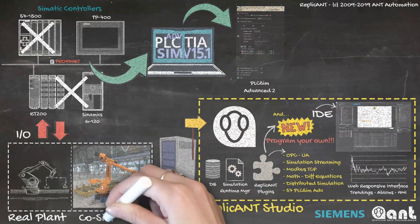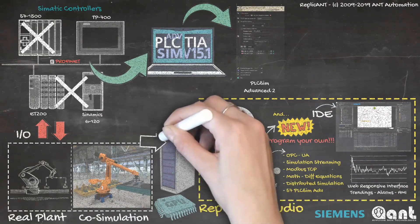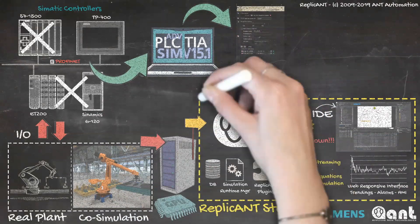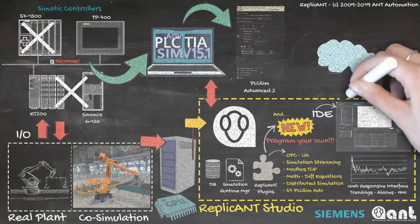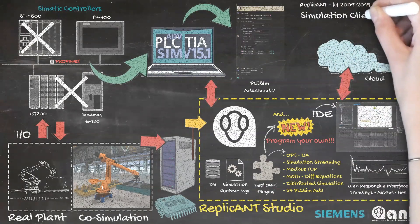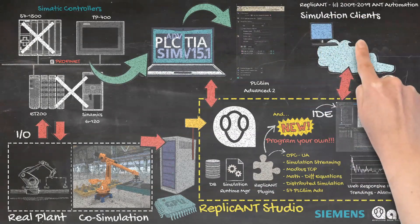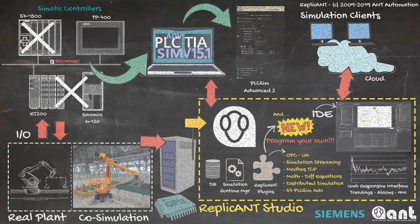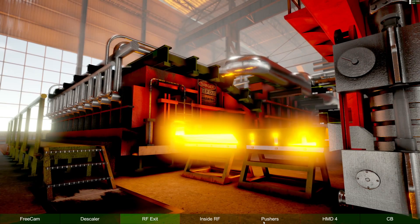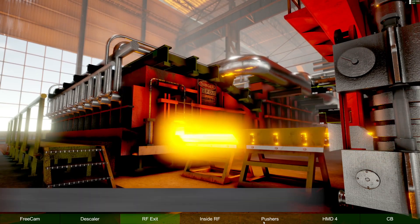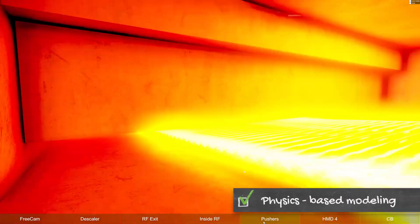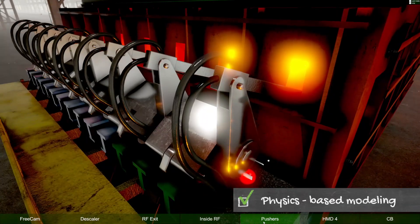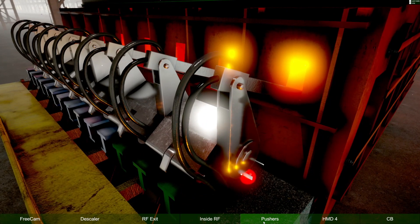Producing a digital twin of a full plant has never been so easy, productive, and above all, accurate with Replicant Studio. Stunning and performant real-time photorealistic rendering with physics simulation.